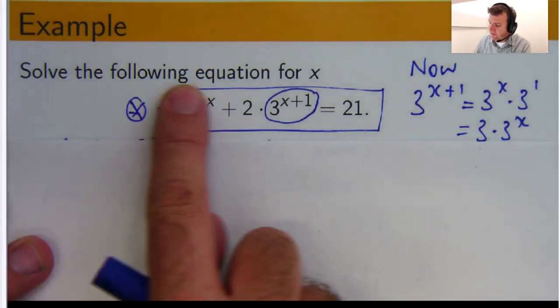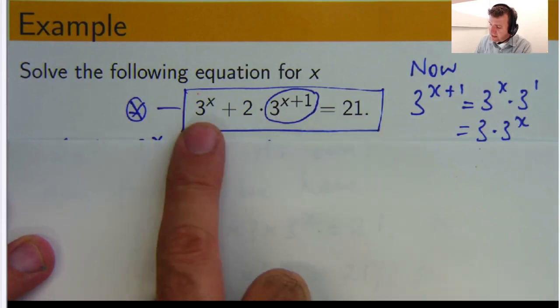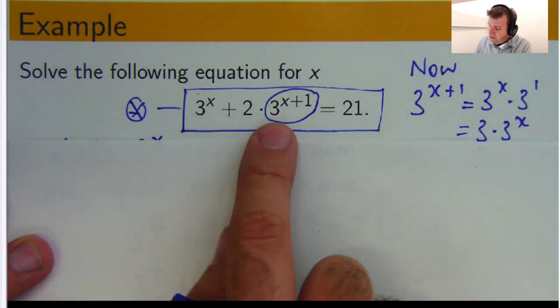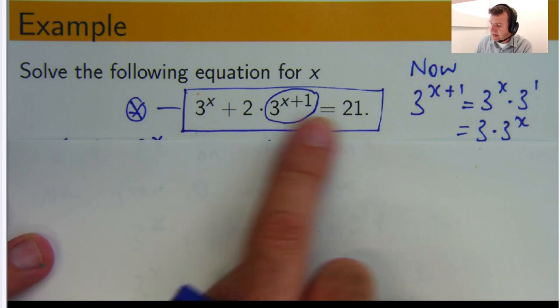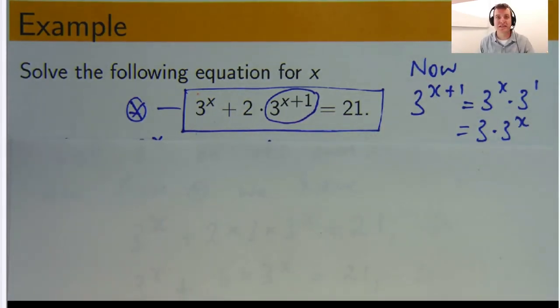We're asked to solve the following equation for x. So it's 3 to the x plus 2 times 3 to the x plus 1 equals 21. And the reason I've written here a little bit earlier is because I actually did this video and forgot to put my microphone down, so it was all silent.